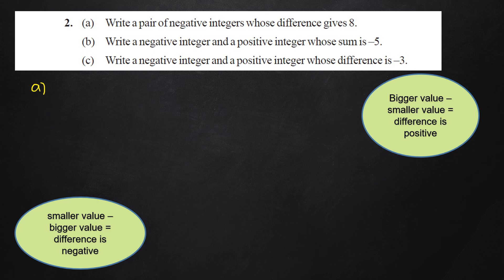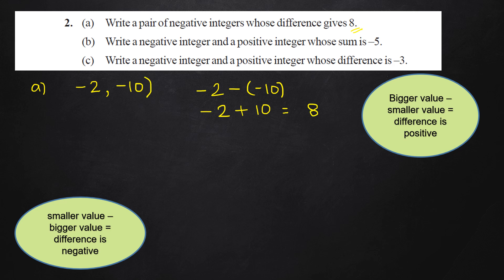That means we just have to pick two negative integers with a gap of 8 units on the number line. So I can pick minus 2 and minus 10. The difference is positive, meaning I'm subtracting the smaller value from the bigger value. So: minus 2 minus minus 10, which becomes minus 2 plus 10, giving the answer as 8.